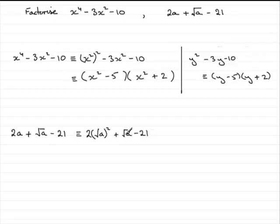So this is a quadratic in root a. If we were to let y equal root a then what we've got is 2y squared plus y minus 21. And this can be factorised.